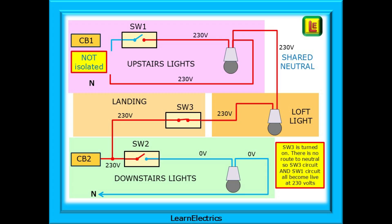Look at what happens to the lighting conductors when SW3 is switched on, put into the closed position. SW3 is turned on. There's no route to neutral, so SW3 circuit and SW1 circuit all become live at 230 volts. It's the shared neutral that carries the 230 volts into your once isolated upstairs lighting circuit.